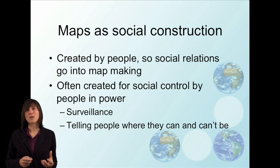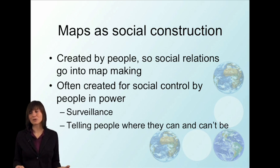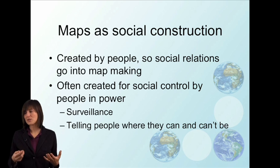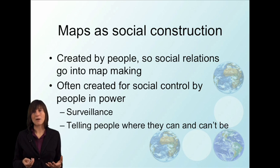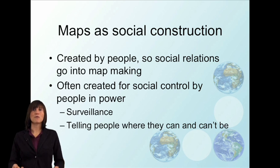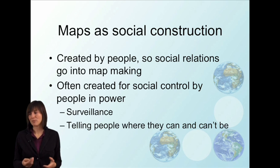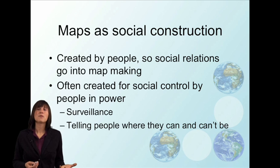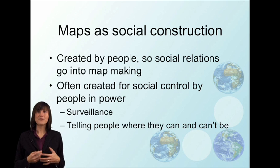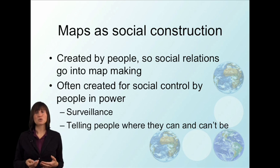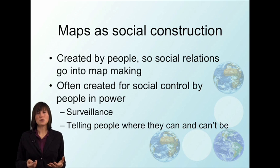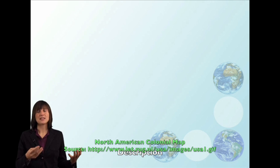One important thing to keep in mind about maps is that they're made by people — they're a social construction, and what goes into them are the social relations, biases, and flaws of their makers. You shouldn't think of them as an objective reality, but as a process made by human hands. Historically, map making was something very few people had the power and technology to do, so it was often controlled by elites and used to take control of space — for example, drawing a line on a map and claiming an area belongs to your country when plenty of other people there would disagree.